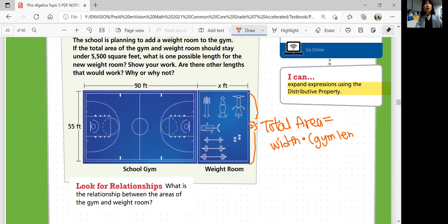But the length is gym's length plus the weight room's length, right? So the total length is both of them combined. So if you multiply that, then you get the total area. So how can you write that in an expression? This is 55 is the width times 90 plus x could be your expression.